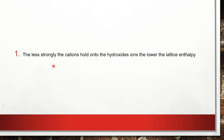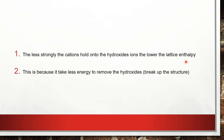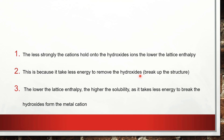The less strongly the cations hold onto the hydroxide ions, the lower the lattice enthalpy — that is, the less energy required to break up the ionic lattice. So there is a lower lattice enthalpy as the cations hold onto the hydroxide ions less strongly, because it takes less energy to remove the hydroxide from the metal cation. The lower the lattice enthalpy, the higher the solubility, as it takes less energy to break the hydroxide from the metal cation.